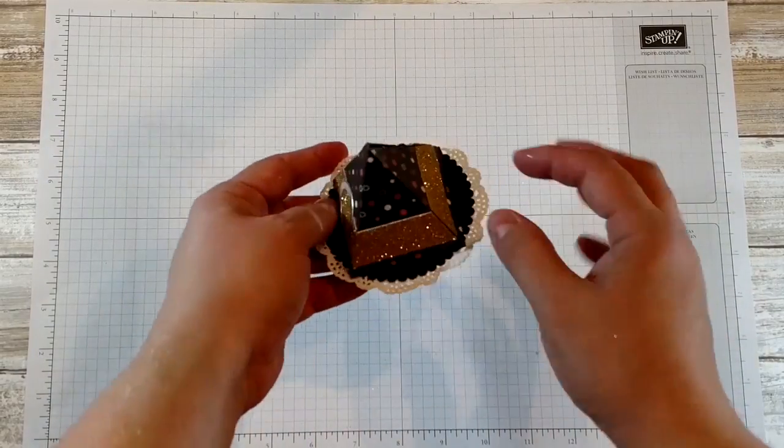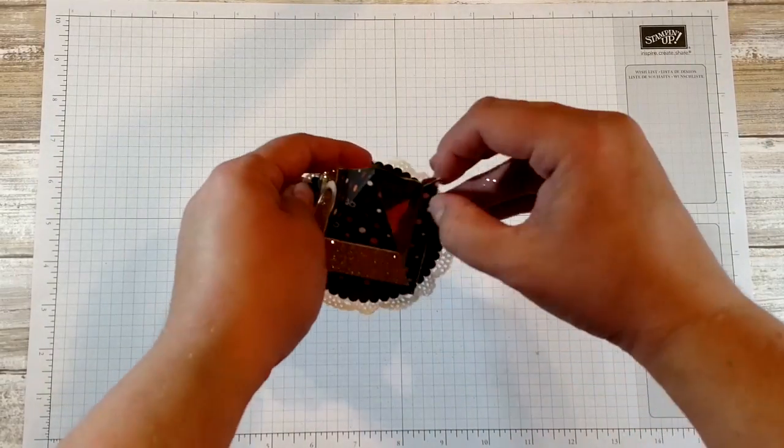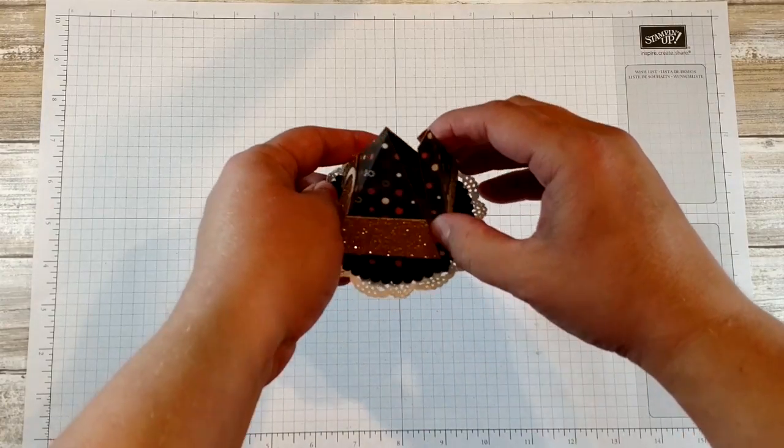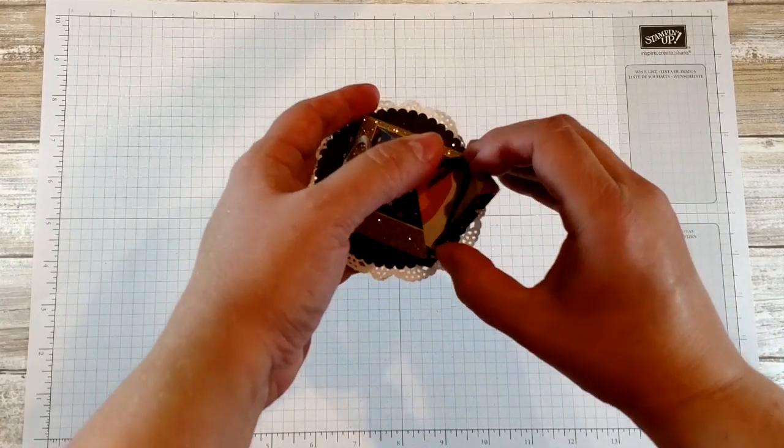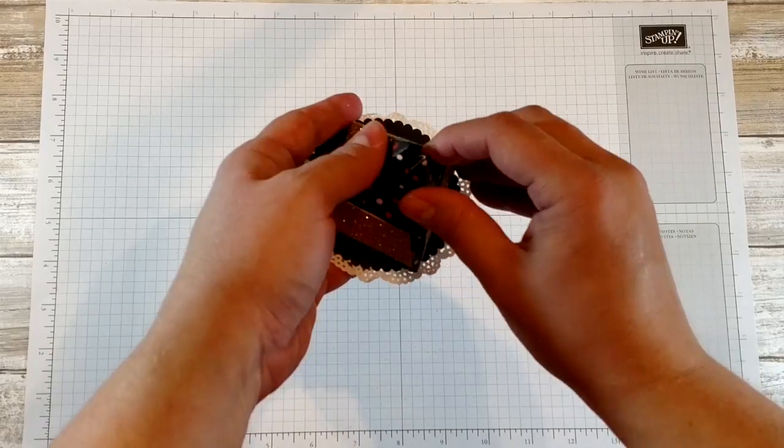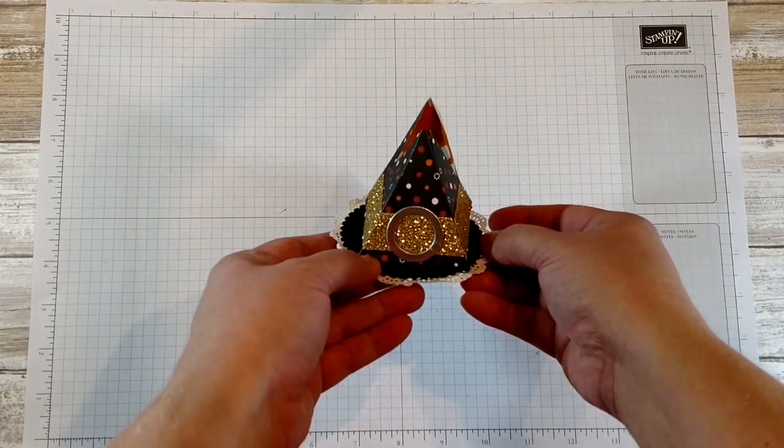And that's it. Now you can just pop the back open and put your treats in and then close it back up. I hope you liked the tutorial. Have fun making it.